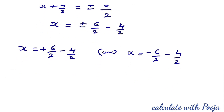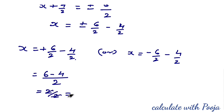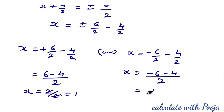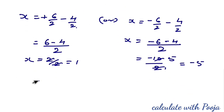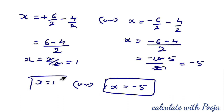Simplifying: x = (6 − 4)/2 = 2/2 = 1, and x = (−6 − 4)/2 = −10/2 = −5. So x = 1 or x = −5 is the answer. This is the complete square method.